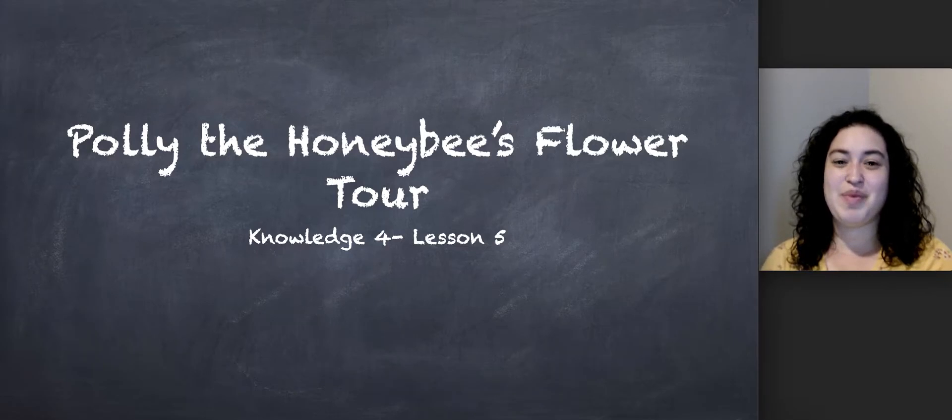Today's lesson is called Polly the Honeybee's Flower Tour. Remember, plants have many different parts. They have roots, stems, branches, leaves, flowers, and seeds.